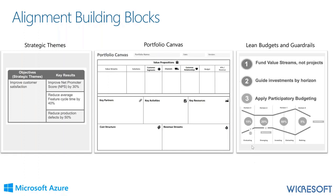The third component of alignment is lean budgets and guardrails. Two of the items are more explicit event ceremonies that will take place. One is driven by investment horizon — we categorize every epic into horizons in order to determine how we're investing into our solutions and value streams. You can see investment horizons zero through three, with prescriptive percentages for where the portfolio budget should be. These are key inputs; if we can complete this, we can then operationalize that portfolio Kanban.